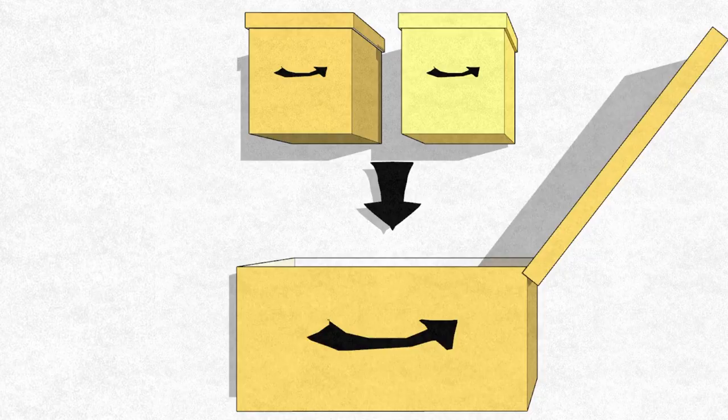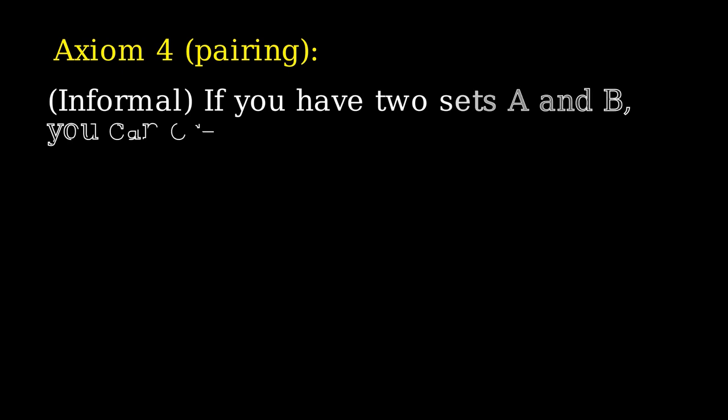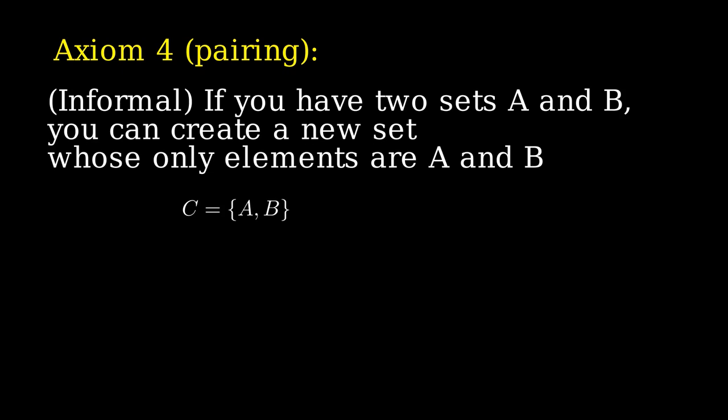Here's axiom 4. Axiom 4 says that if you have two Amazon boxes, you can put them into a bigger box — really it says that in a bit more formal way. Axiom 4 is the axiom of pairing: if you have two sets A and B, you can create a new set whose only elements are A and B.